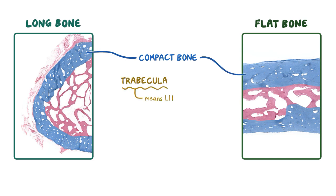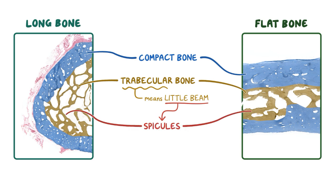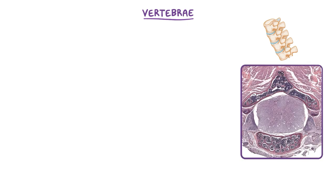Trabecula means little beam in Latin, which is why the trabecular bone has small beam-like structures that are also called spicules. The spicules connect with each other to form a network of interconnecting spaces that contain bone marrow. The vertebrae is another example of a bone that has both types of morphology, but its compact bone is only a very thin outer layer, with the majority of the bone consisting of trabecular bone.